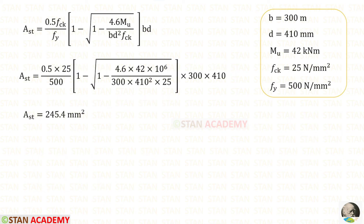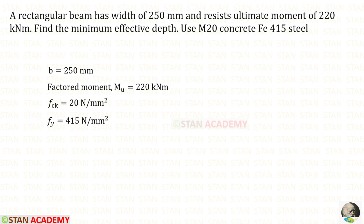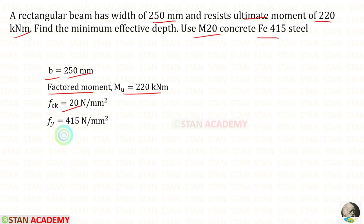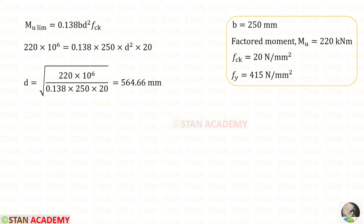Alternatively, AST can be found directly using a memorized formula. For the last problem, breadth B = 250 mm, the ultimate (factored) moment = 220 kNm, FCK = 20, FY = 415, and we need to find the minimum effective depth. For minimum effective depth the section should be balanced, so using the Fe 415 formula and applying all values, we obtain the effective depth D.